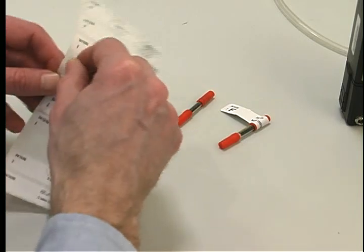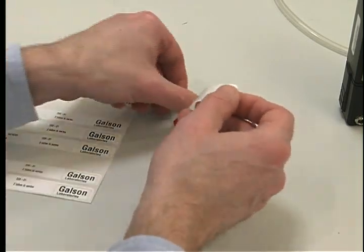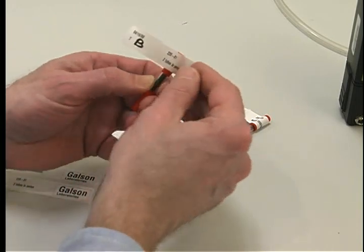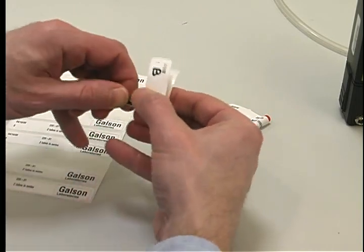After sampling is completed, turn off the pump, remove the tube cover, remove the sorbent tubes, and immediately seal the tubes on both ends with the red caps provided. Label the sorbent tubes.